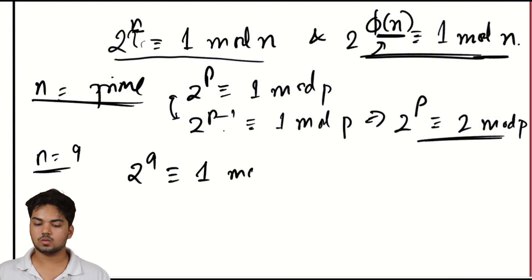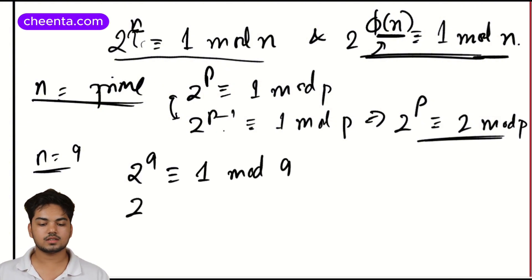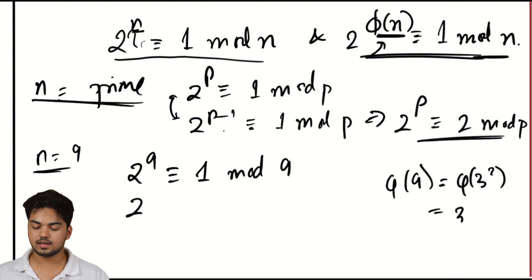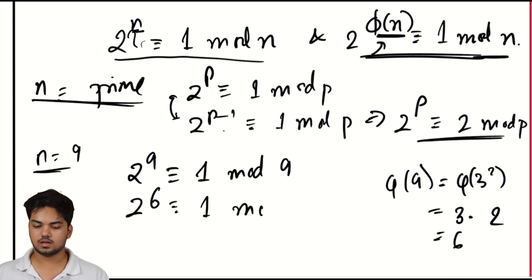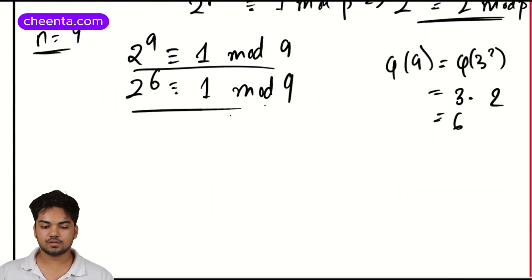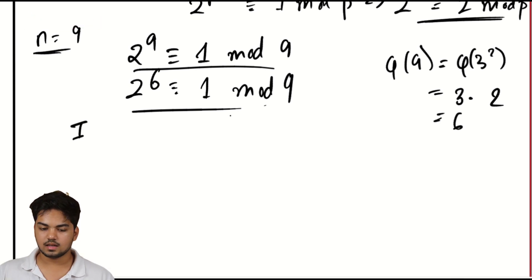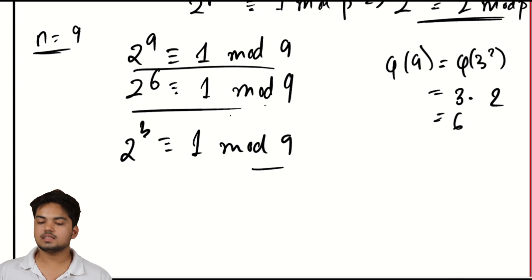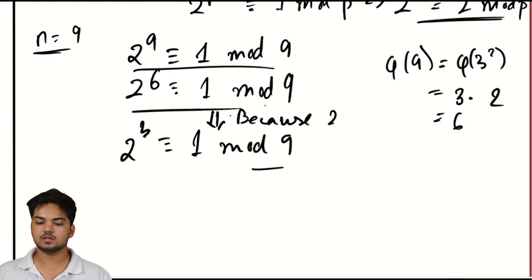If 2^9 were congruent to 1 mod 9, it would cause friction with the statement that 2^φ(9) ≡ 1 mod 9. What is φ(9)? Since φ(3²) = 3^(2−1) × (3−1) = 6, we know that 2^6 ≡ 1 mod 9. Now you can manipulate: in particular, this would give you that 2^3 ≡ 1 mod 9. It's a bit subtle, but it works because 2 is invertible mod 9.